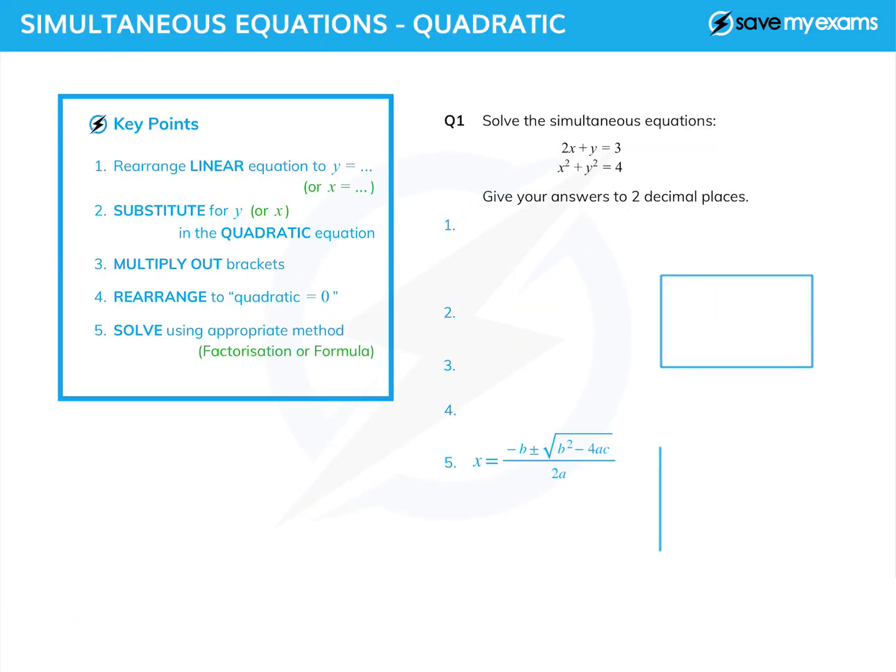In this tutorial, we're going to look at solving quadratic simultaneous equations, or at least simultaneous equations where one of the equations is linear like this first one, and the second one has a quadratic or squared bit in it. This one's actually got two squared bits in it.